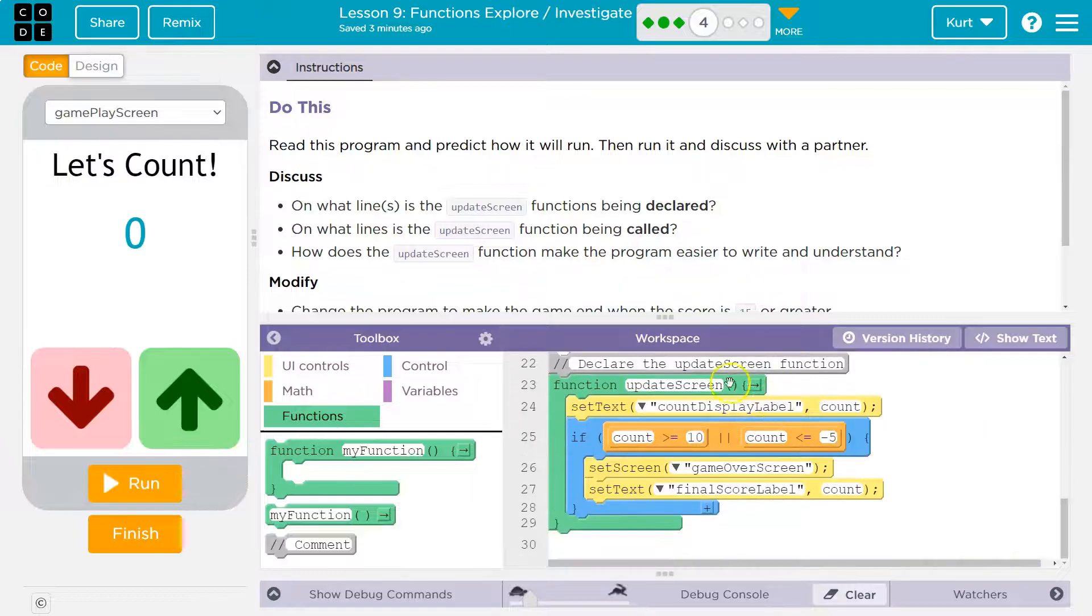How does the update screen function make the program easier to write and understand? Well, look at update screen. If I just see this, that's a lot of stuff, right? I have to think about what is going on here, what's it doing? But if you put it in a box—I call it a box sometimes—if you put it in a function...